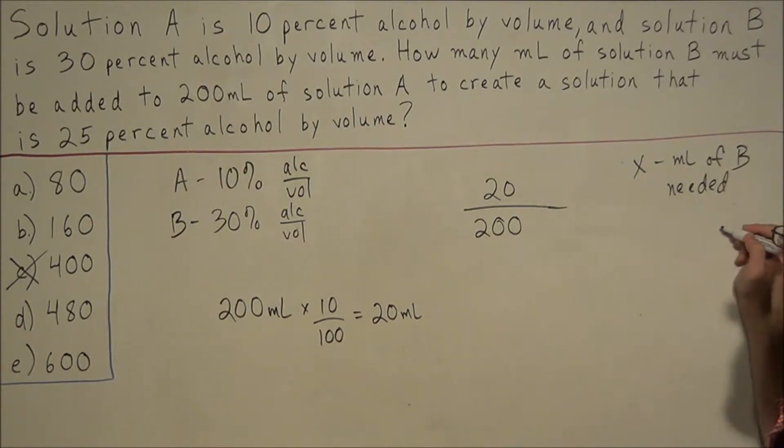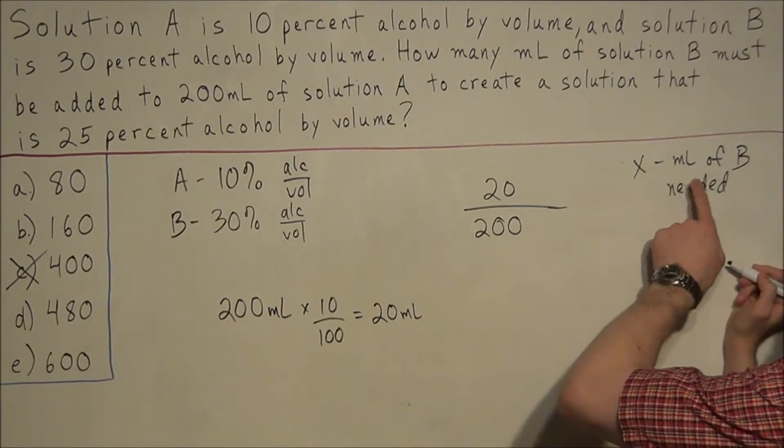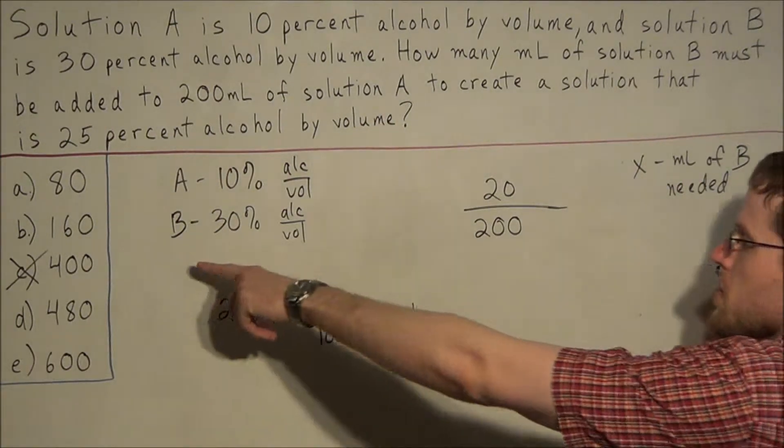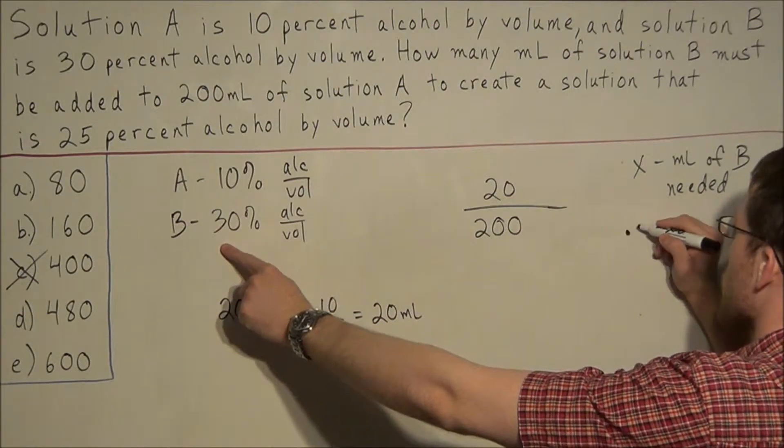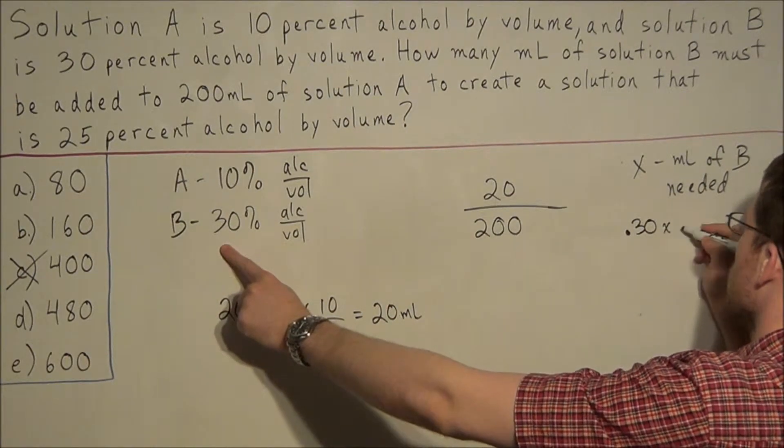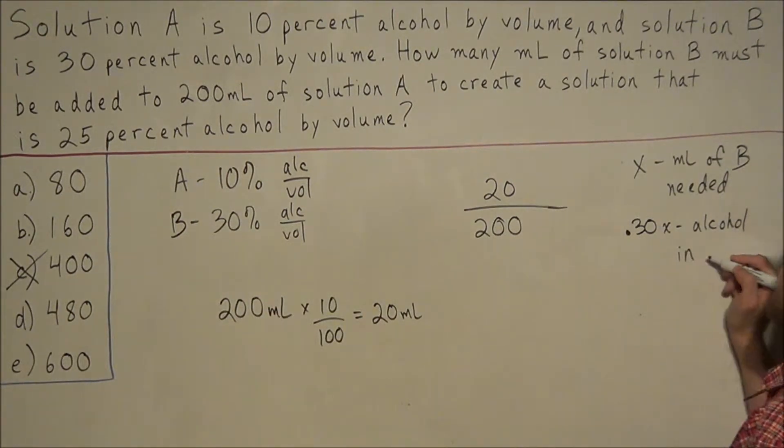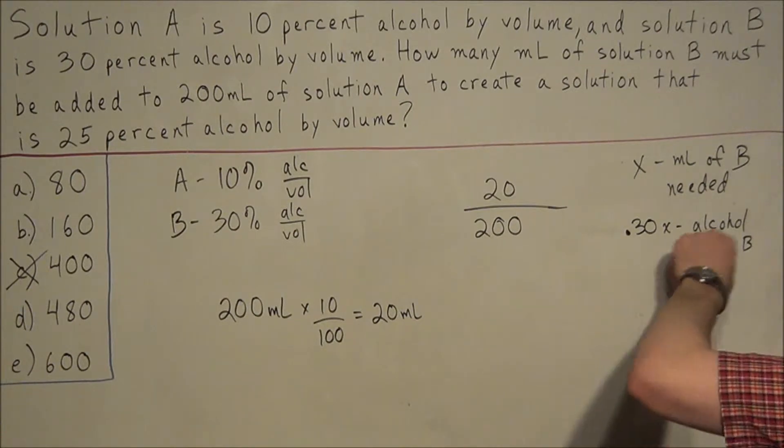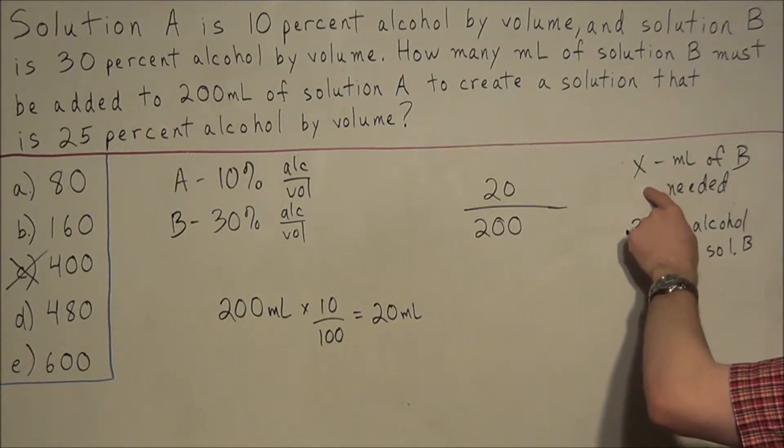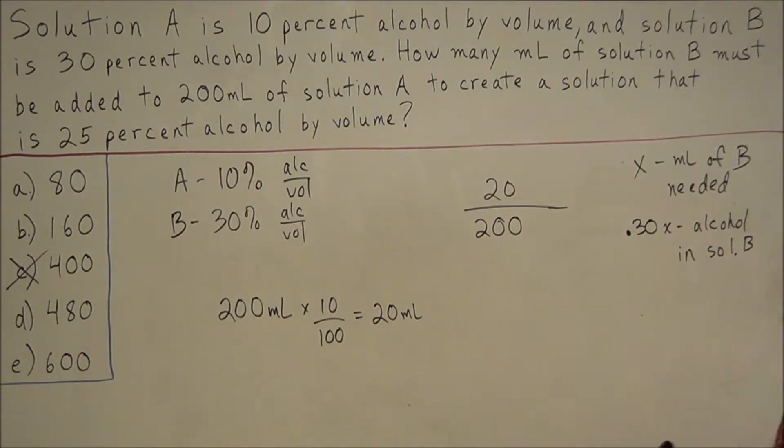And one thing we want to consider is if we need X milliliters of solution B, then 0.30x would represent the alcohol in solution B. That is, 0.30x represents the amount of alcohol in X milliliters of solution B.